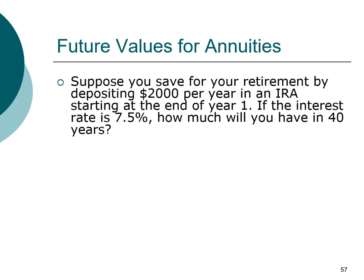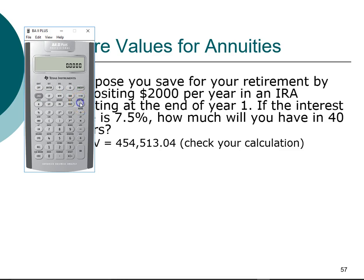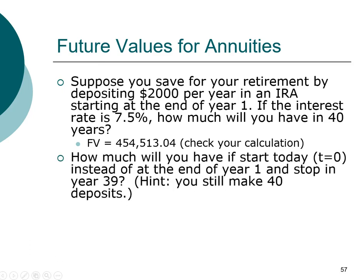Let's practice another example — pause and try it yourself. This problem involves annual deposits with annual compounding: how much would you have in your IRA account after 40 years? The answer is $454,513. Use 2nd → Clear TVM, enter PMT = $2,000, N = 40 years, I/Y = 7.5%, and compute FV.